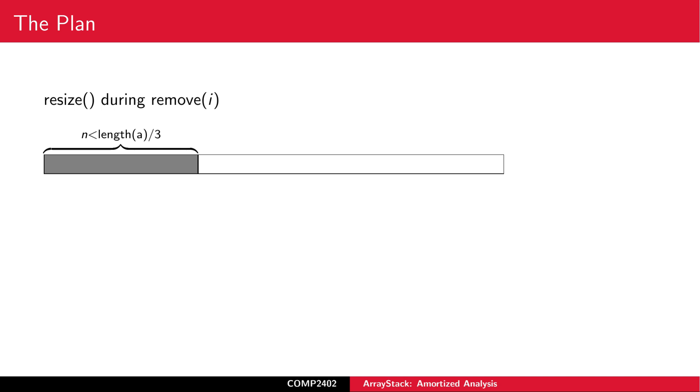After a remove operation, the array A may be less than one-third full. We handle this the same way. We allocate a new array of size 2N and copy the N elements of A into this new array.